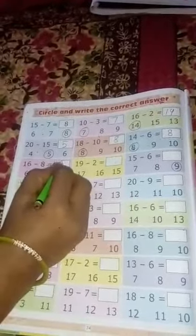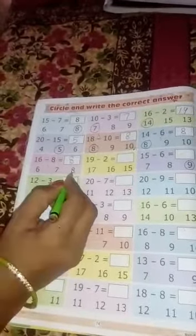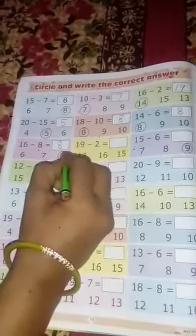Next. 16 में से अगर 8 चला गया तो 8 बन जाता है. Who is the right answer? 6, 7, and 8. Right answer कौन सा है? 8. तो 8 को हम circle कर लेते हैं.